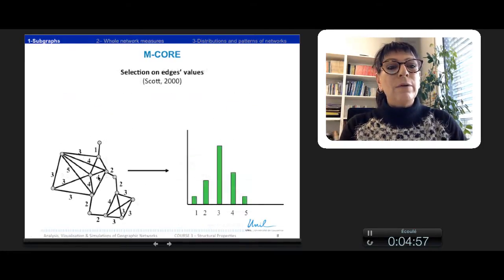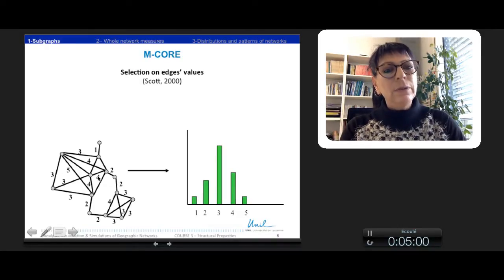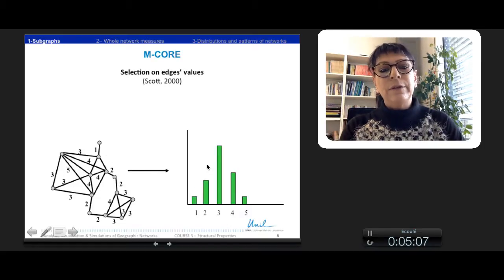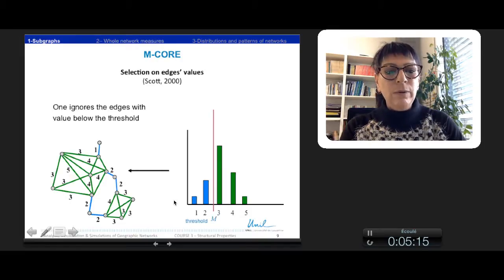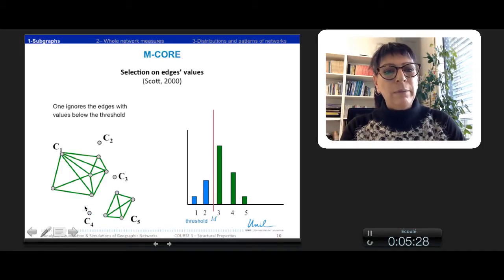Now, we can have also a selection on the edge values. We have a weighted graph with a value associated to every link. We have the distribution here of the different values of the linkages. And we can define a threshold. We can consider to remove or to ignore all the edges with a value below the threshold, one and two, here in blue. We remove them and we obtain some other core, which we can call the M-core.